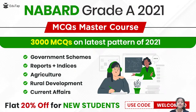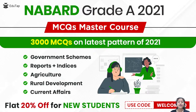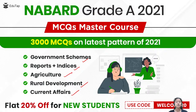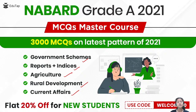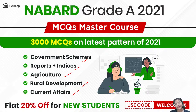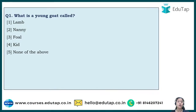We have launched a 3000 MCQ course strictly according to the latest pattern of NABARD 2021, covering government schemes, reports, agriculture, static portion, rural development, and current affairs. New students can get a flat 20% off using the code WELCOME20. For any queries about cutoffs or marks, you can email us at hello@edutab.co.in. Now let's come to question number one: what is a young goat called?